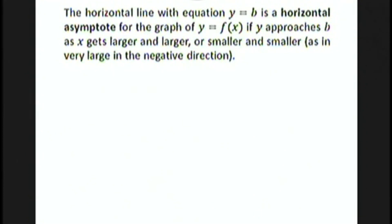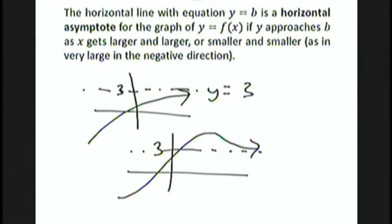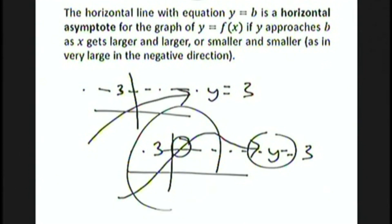The horizontal line y equals b is a horizontal asymptote for the graph of y equals f of x if y approaches b as x gets larger and larger, or smaller and smaller in the very large negative direction. Note that it's a common misconception that a graph could never cross a horizontal asymptote — it's actually okay. Horizontal asymptotes only tell you about the very end behavior of the graph; they don't tell you about what happens in the middle.